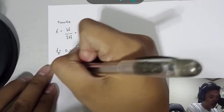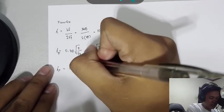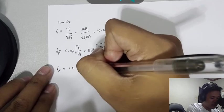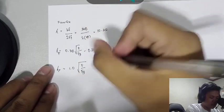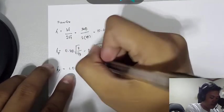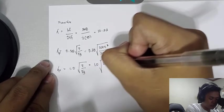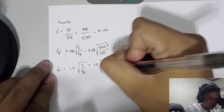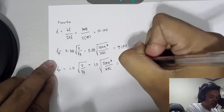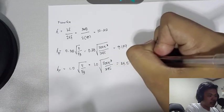So we'll now get Lambda R. We have 1.0 multiplied by square root of E over FY. Direct substitution gives us a value of 24.077.